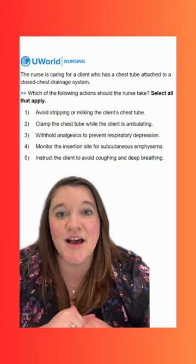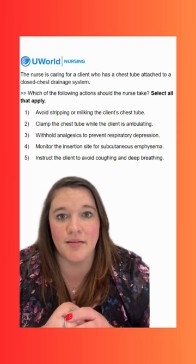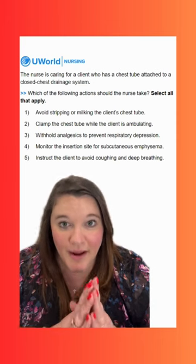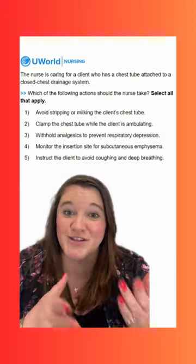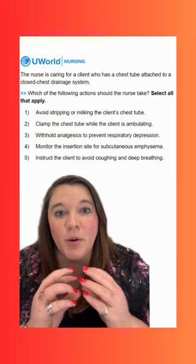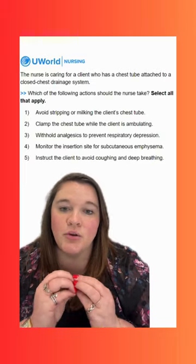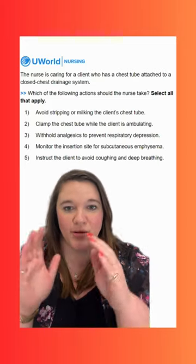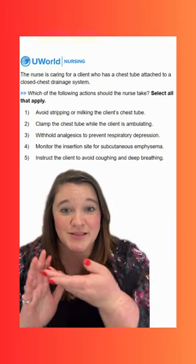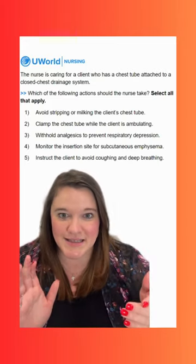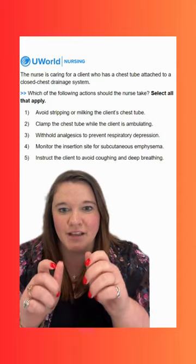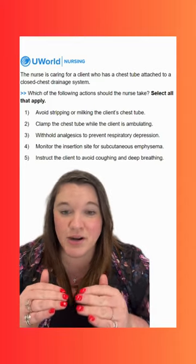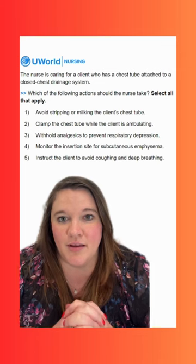Option one says avoid stripping or milking the client's chest tube. This is a correct option — we don't want to do this. When we strip or milk the client's chest tube, it creates a change in intrathoracic pressure. Because we have our pleural cavity, which is a closed cavity, now attached to this other closed system. So when we clamp or pull on it, we are changing that intrathoracic pressure. We want to avoid that if possible.